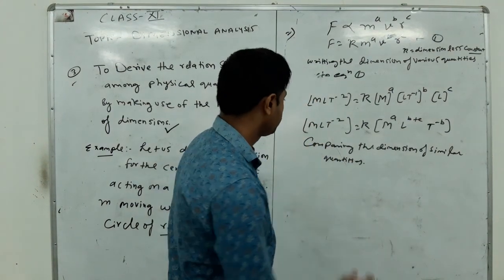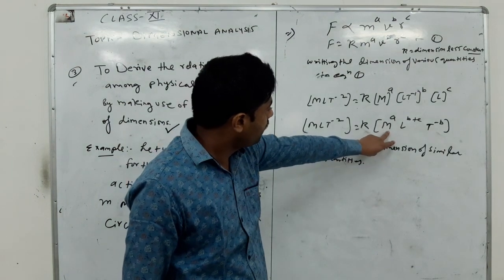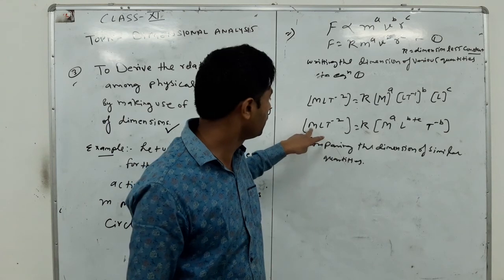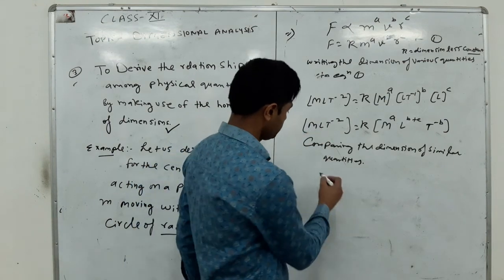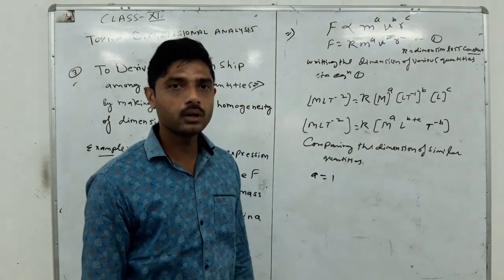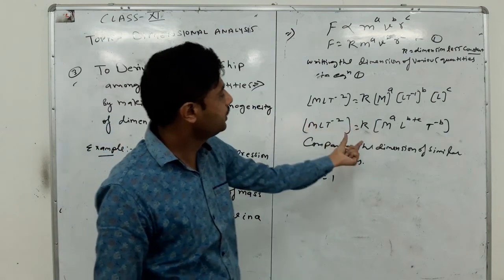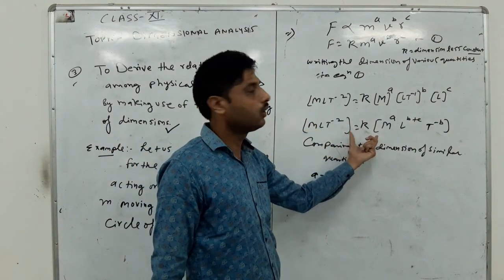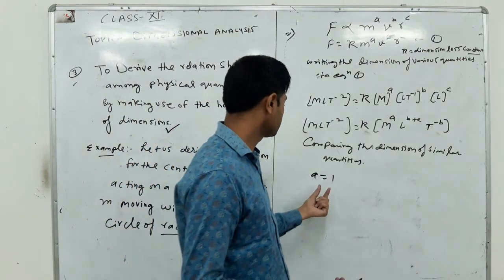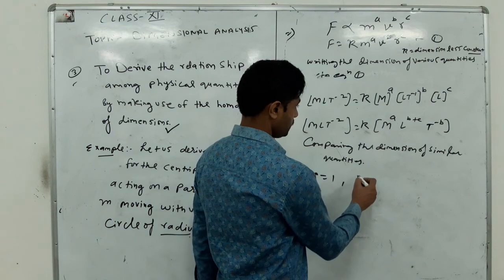Power of M is A and on this side power of M is 1. This power will be equal because according to homogeneity, the dimension of both sides of equation remain same. So A equals 1.